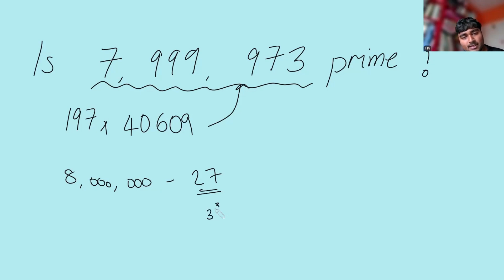Very nicely, 8 million is also a cube number. In particular, it's 200 cubed. So 8 million minus 27, we've got 200 cubed minus 3 cubed. We can use the difference of two cubes.